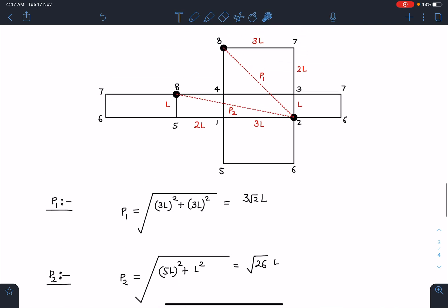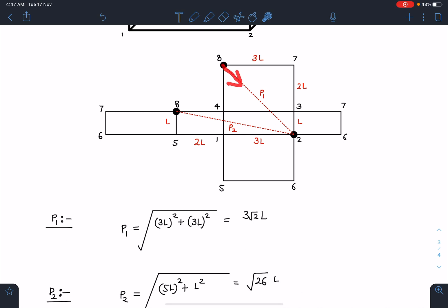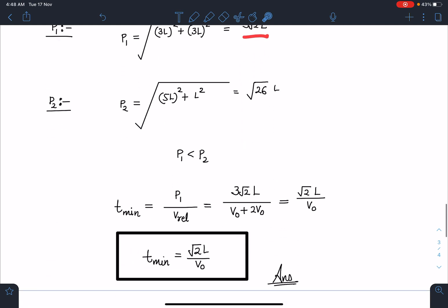So insect and lizard are going to move towards each other along this line. One is moving with V₀, another one is moving with 3V₀. So their relative velocity is going to be 4V₀ and this length is 3√2L. Minimum time is going to be path length divided by V relative. If you simplify this, you will get a very clean answer: √2L by V₀. This is the final answer for this problem.